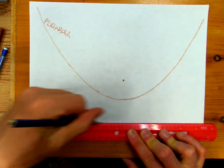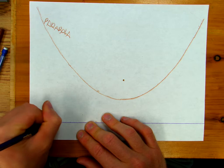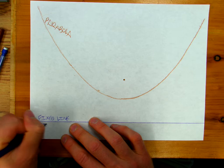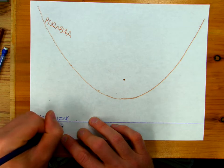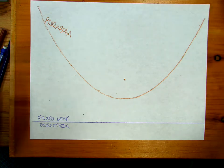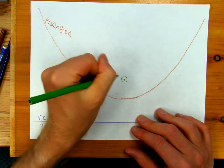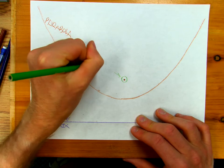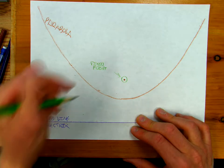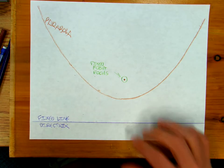Okay, so now we have a few things. We have our fixed line. And that fixed line has a name. We're going to call that fixed line the directrix. Then we've got here, we've got our fixed point, and we're going to call that fixed point the focus. So we've got our focus, we've got our directrix.